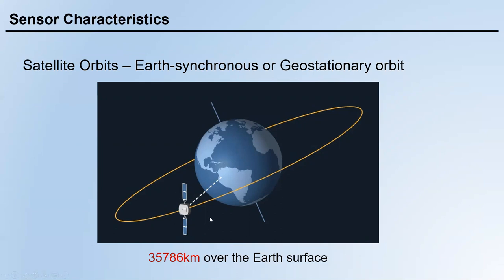On the other hand, we have Earth-synchronous or geostationary orbit. This orbit is very special — the satellite orbit height is 35,786 kilometers over the Earth's surface, and there is no relative movement between the Earth and the satellite. When the Earth rotates at a specific angular speed, the satellite also rotates with the same angular speed.